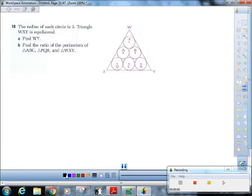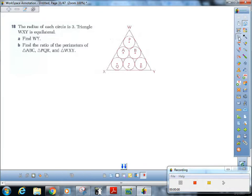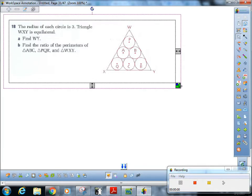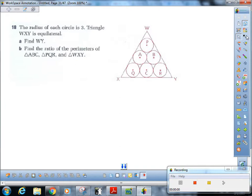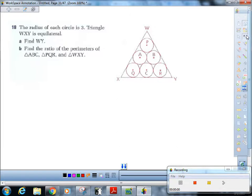Okay, so we've got varied levels of difficulty in these questions here. We know that the big triangle's equilateral and that every radius is three.